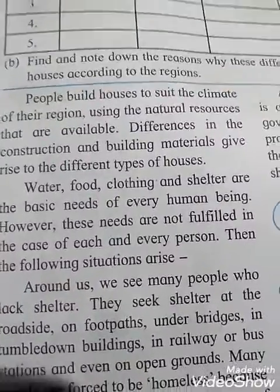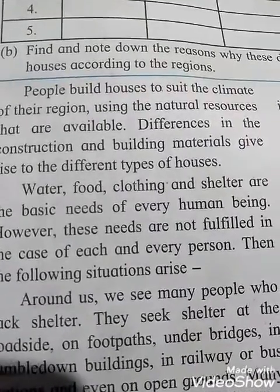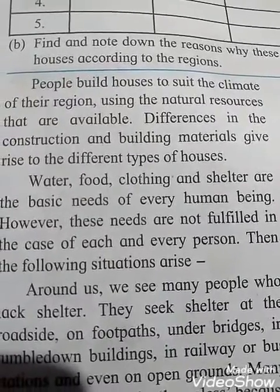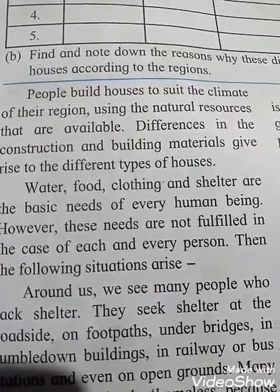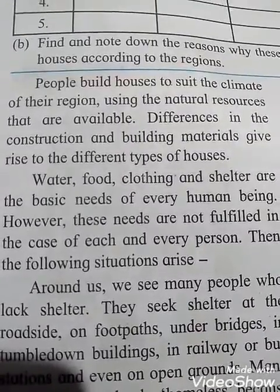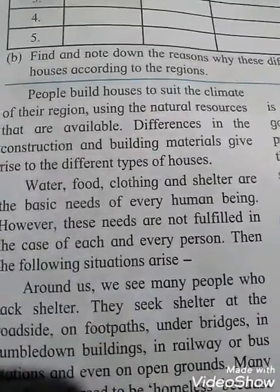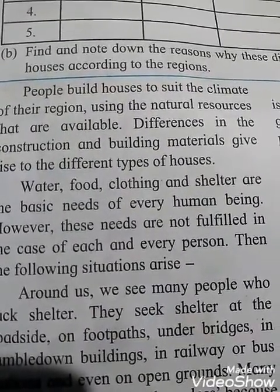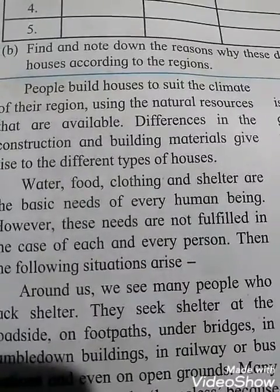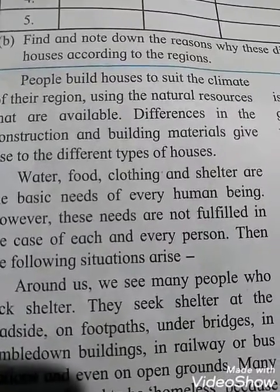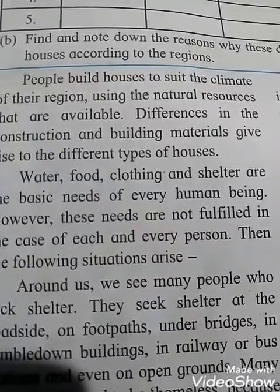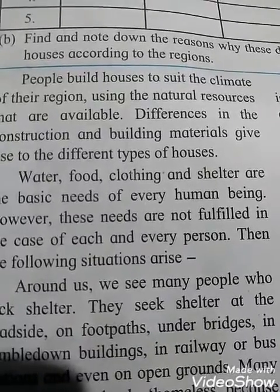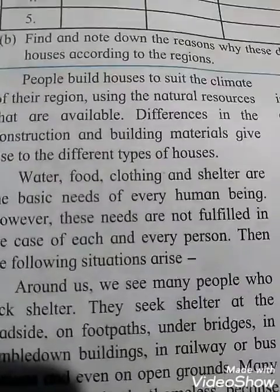People build houses to suit the climate of their region, using the natural resources available in that place. Differences in construction and building materials give rise to different types of houses. For example, in plain regions, flat roof houses are built with rectangular construction. In regions of heavy rainfall, slanted roof houses are built, also rectangular.